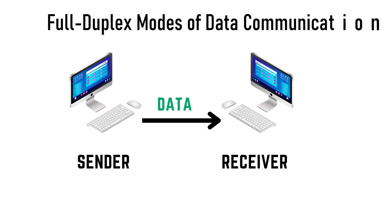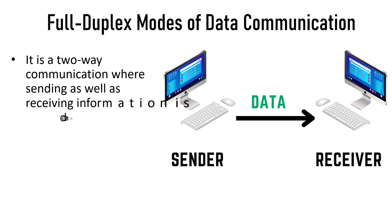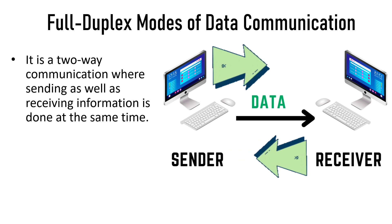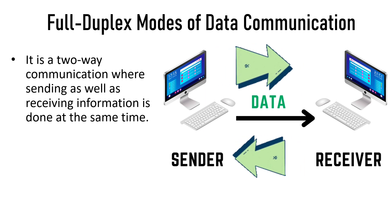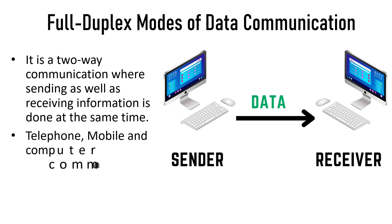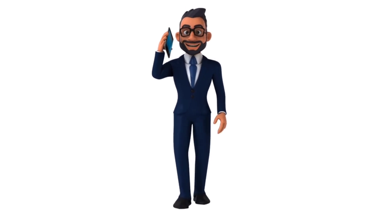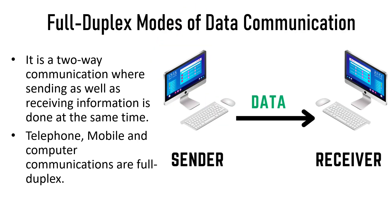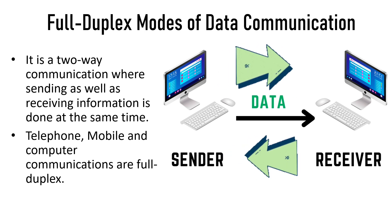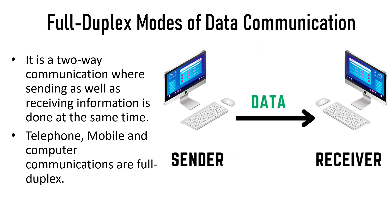Full duplex mode is also a two-way communication mode where sending and receiving of information can be performed at the same time. While the sender is transmitting data, the receiver can also transmit data simultaneously — data can travel in both directions at the same time. Communication through telephones, mobile phones, and computers are examples of full duplex mode.